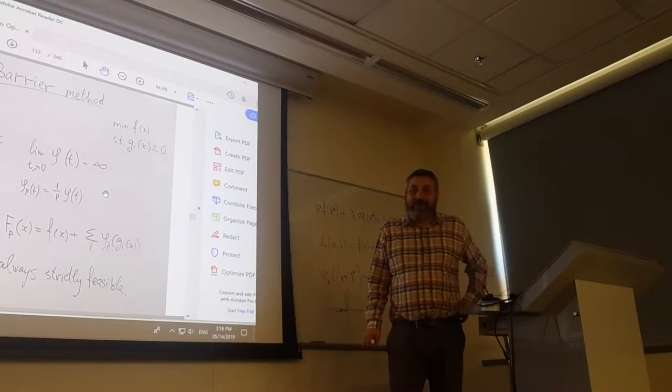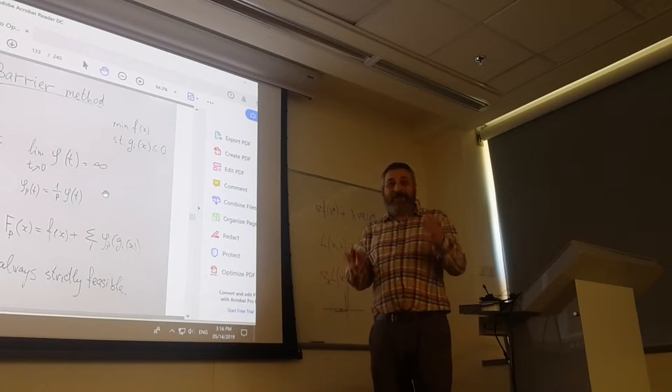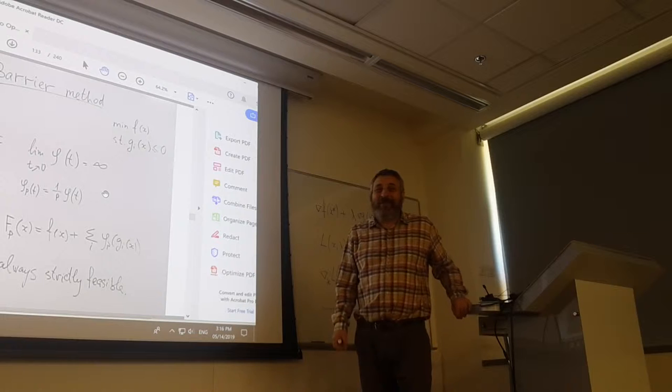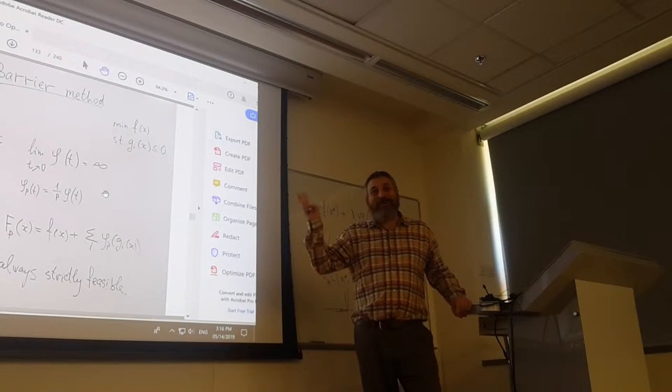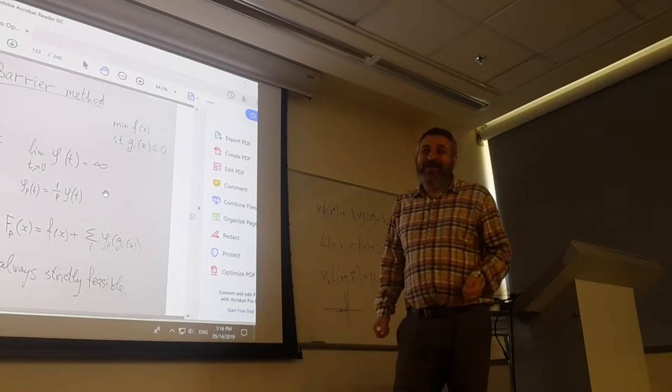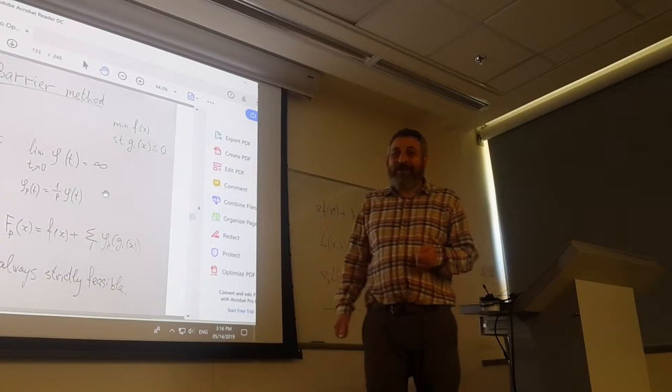BFGS stores more information, it keeps memory of what was happening before and builds it in a clever way that it's self-correcting. That's why it's better. It may be in practice better than conjugate gradient for non-linear functions.